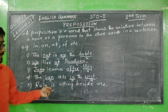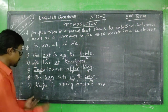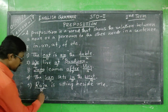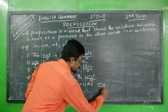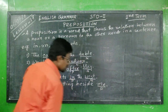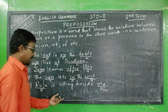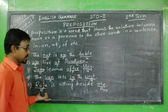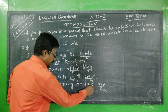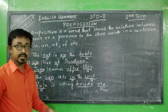'Raju is sitting beside me.' Here, 'Raju' is the noun and 'me' is the pronoun. Between this noun and pronoun there is a preposition, which is 'beside'.